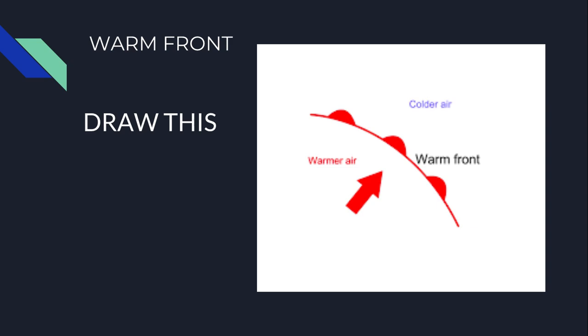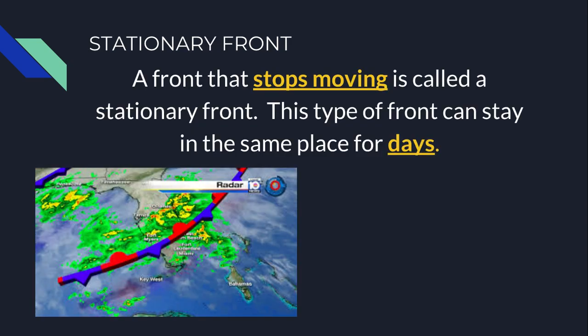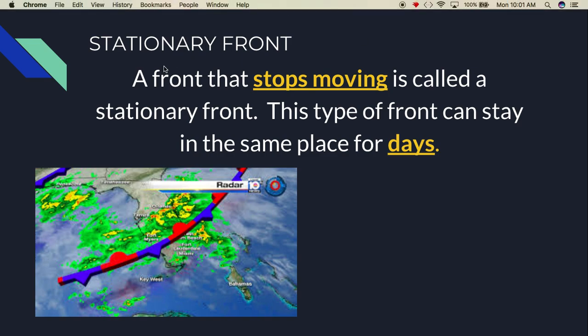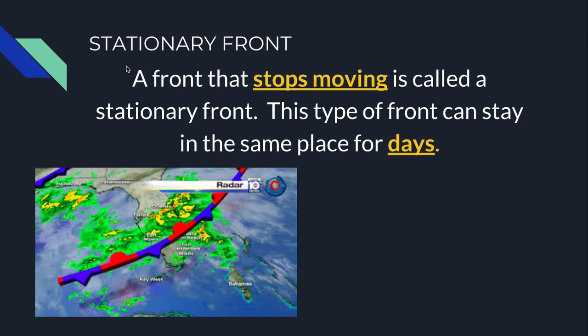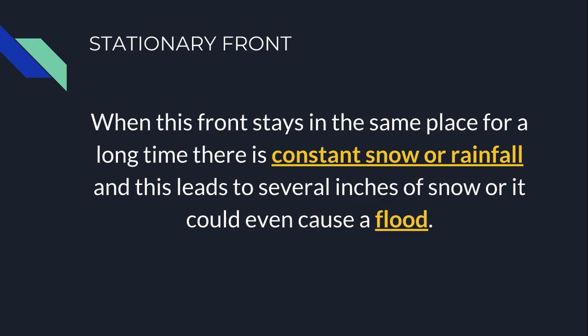Our third and final front is the stationary front. A stationary front is a front that stops moving — neither cold air nor warm air is moving; it just stays put. These fronts can stay in the same spot for days, which can be pretty problematic. When this front stays in the same place for a long time, there is constant snow or rainfall that can lead to several inches of snow or cause floods.